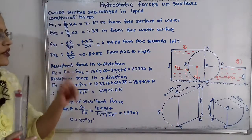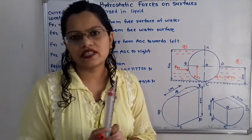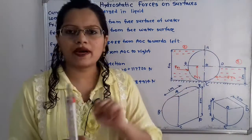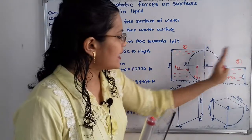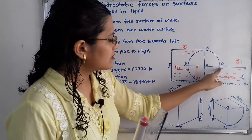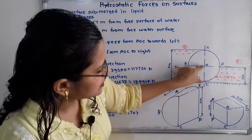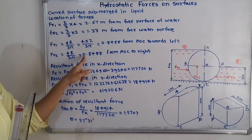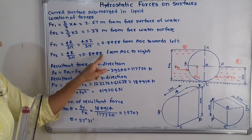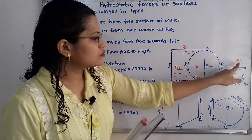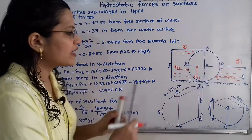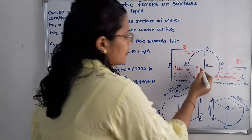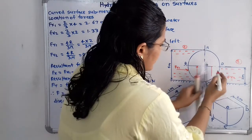Similarly, for FY2 on the right hand side, using the same formula 4R / (3π) with R = 2 meters (radius of curve DC, which equals distance OC), the location is also 0.8488 meters. But since suffix 2 is for the right hand side, we take this distance from point O towards the right.